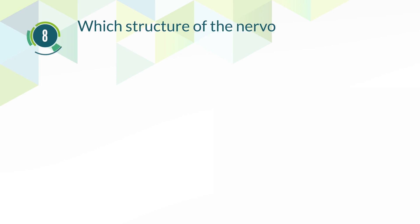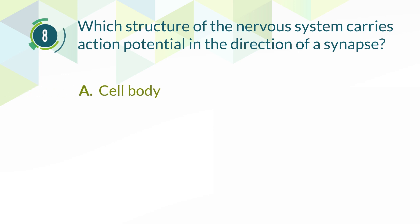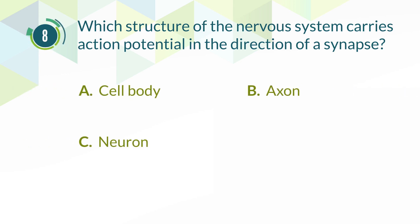Number 8. Which structure of the nervous system carries action potential in the direction of a synapse? A. Cell body. B. Axon. C. Neuron. D. Myelin.